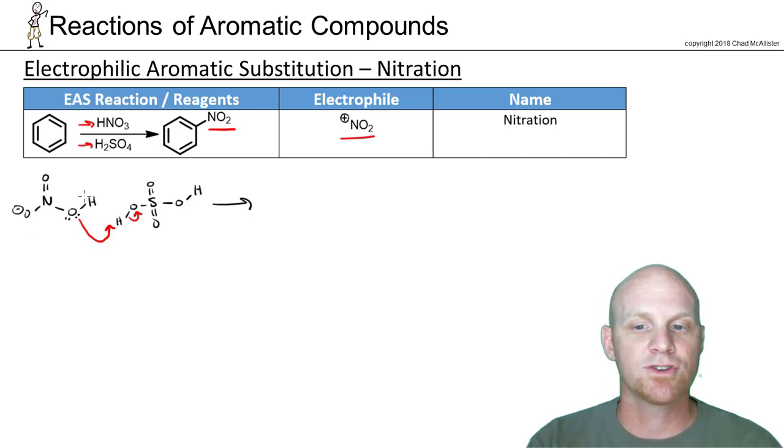But if we protonate the OH over here, we can turn it into a good leaving group, similar to what we saw with alcohols. And that's the key of why we protonated there.